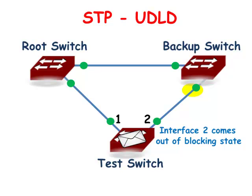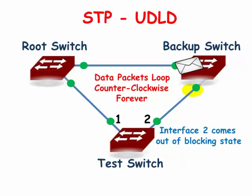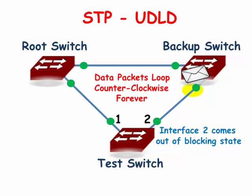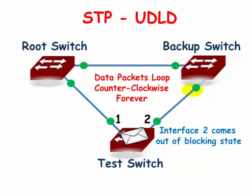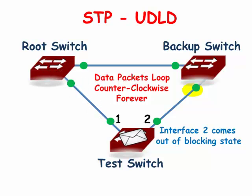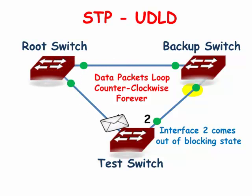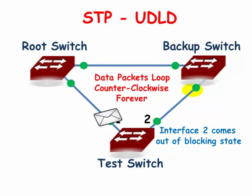Unidirectional link detection is a Cisco proprietary feature that prevents ports from reacting to BPDUs going missing. UDLD-enabled ports will send out echo messages every second containing their device ID and port ID. The local switch expects the remotely connected switch to reply to the echo. If the switch does not receive a reply to five of its echo packets, the port is declared unidirectional and will be put in the error-disabled state.